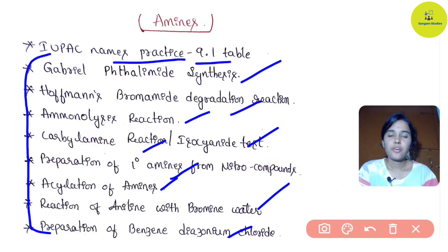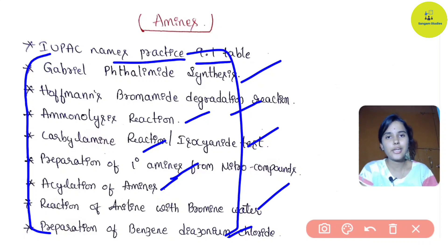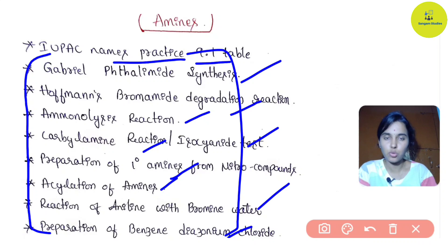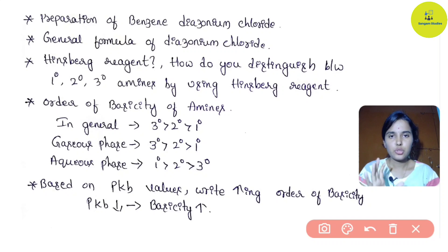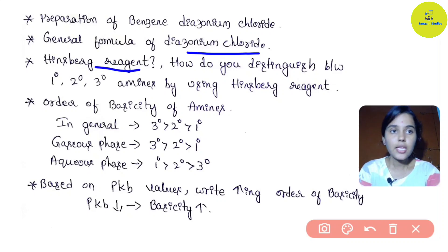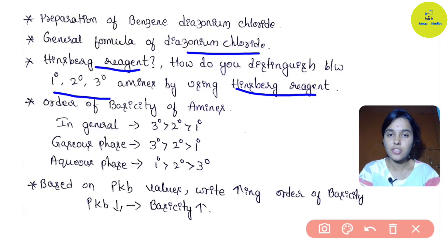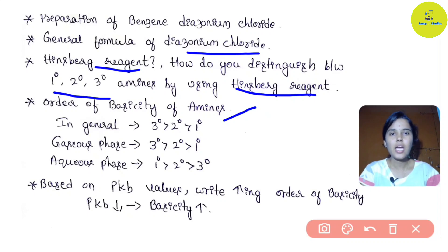Practice all these chemical reactions with reactants and products. In this chapter, also practice diazonium fluoride reactions and the general formula. Hinsberg reagent is important - using Hinsberg reagent you can distinguish primary, secondary, and tertiary amines. There are chances for this in the second test.